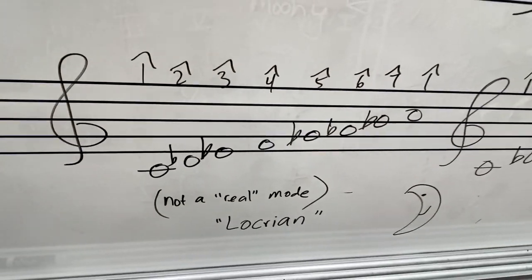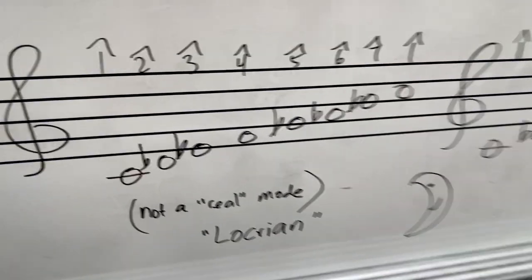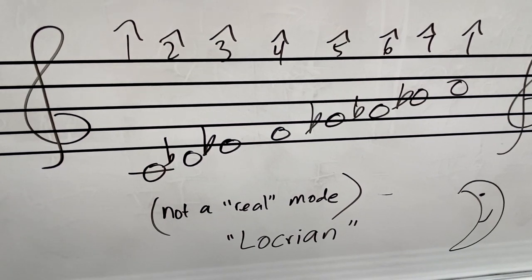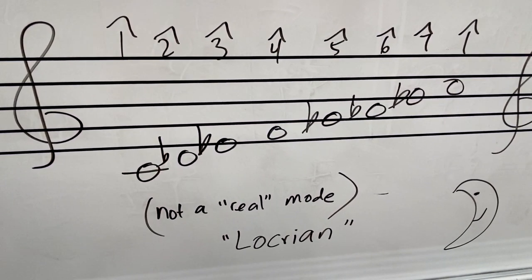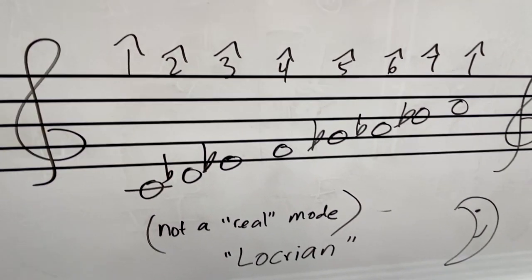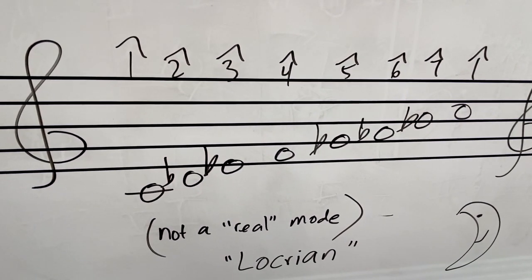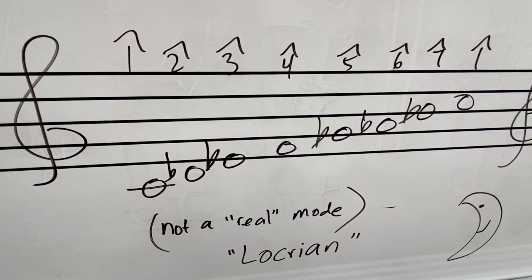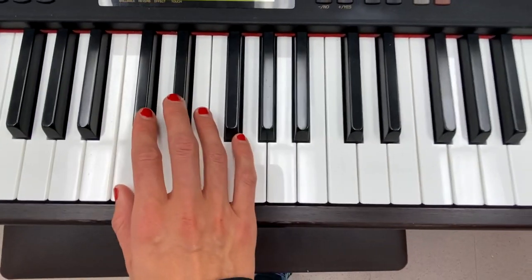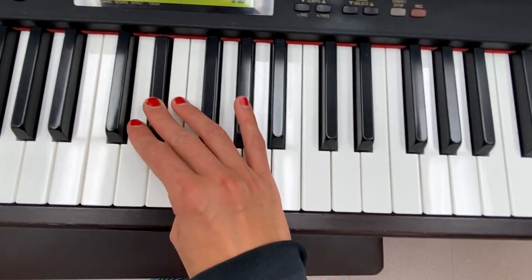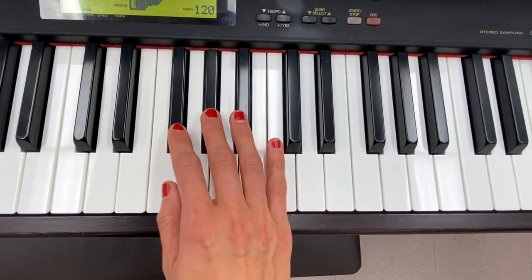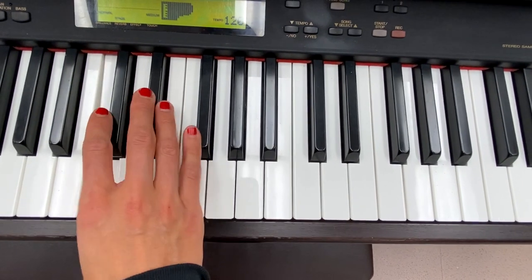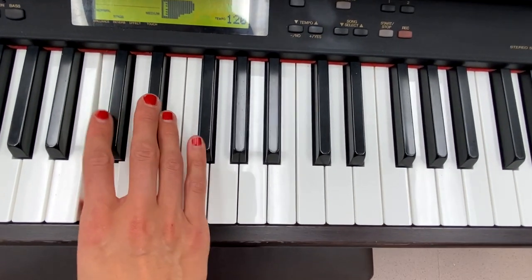Locrian has lowered second, third, fifth, sixth, and seventh scale degrees. I don't really improvise in this mode because there's no real sense of tonic — it's really hard to tell what your tonic is.